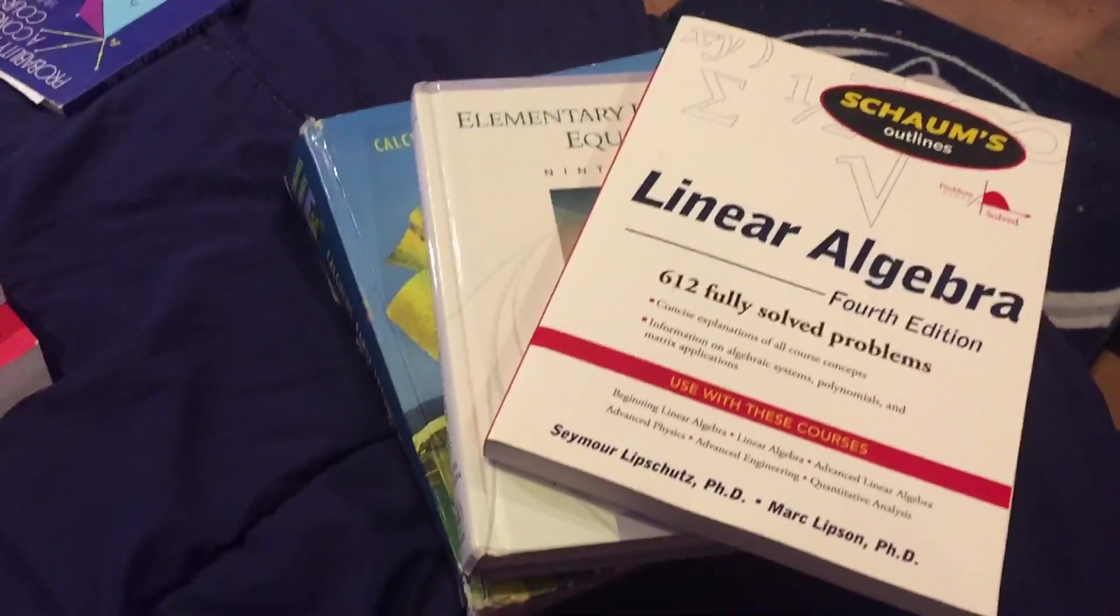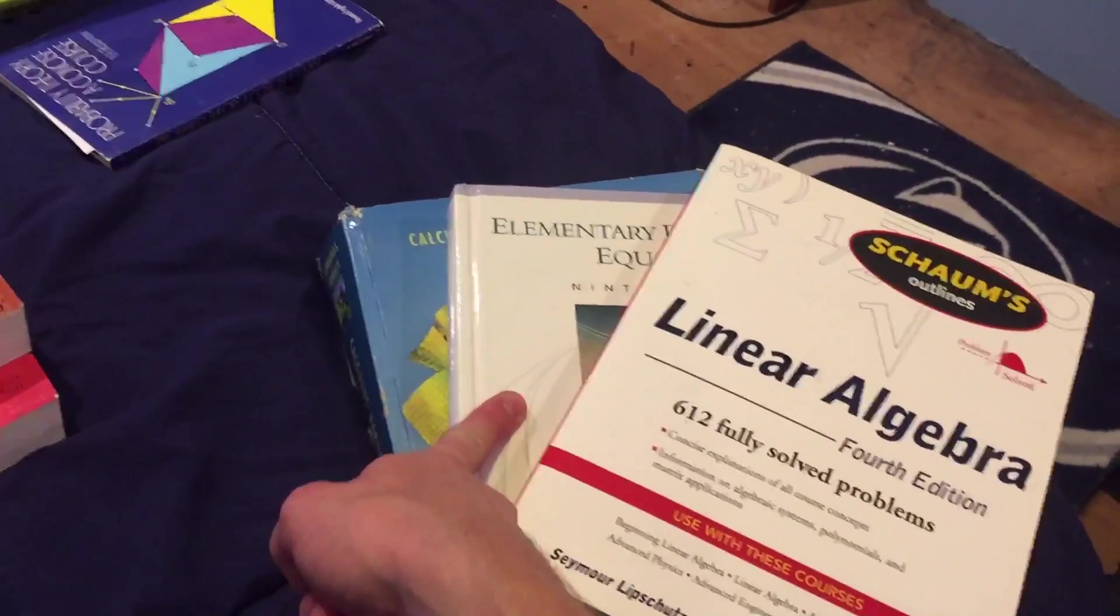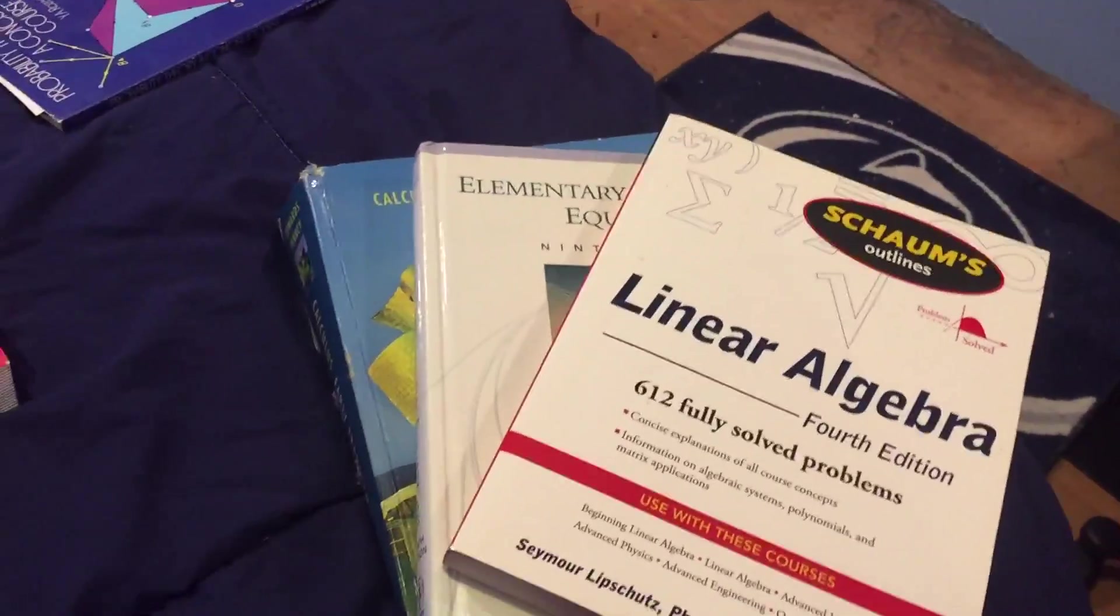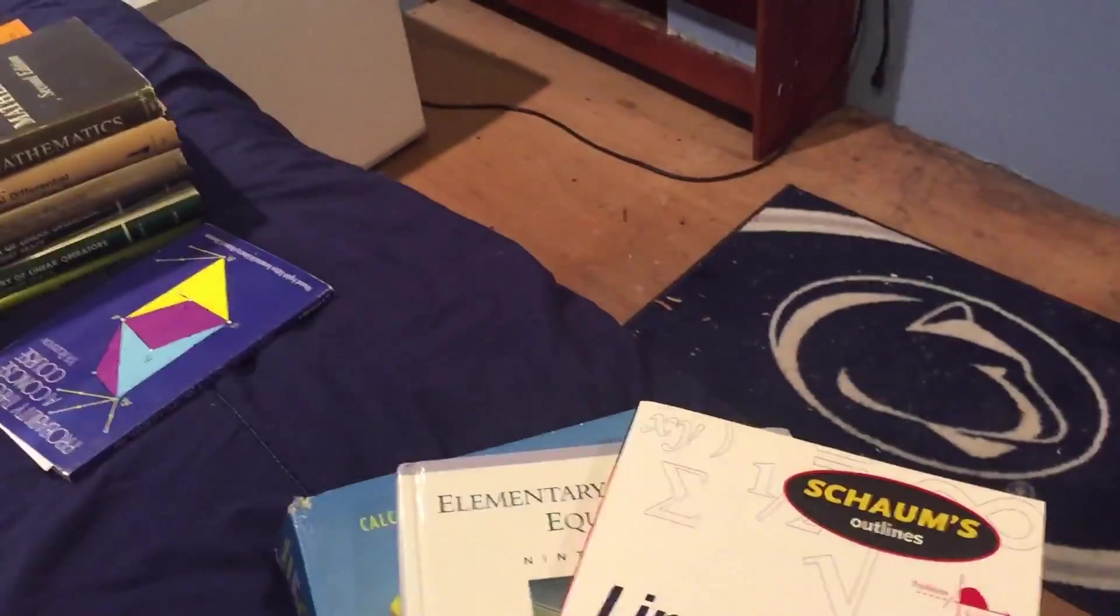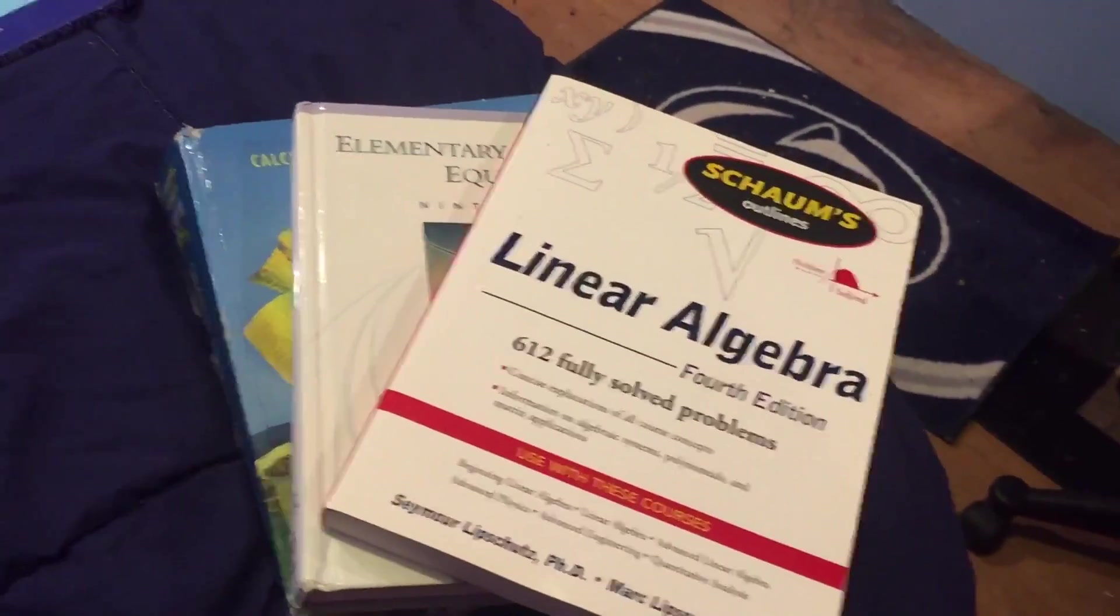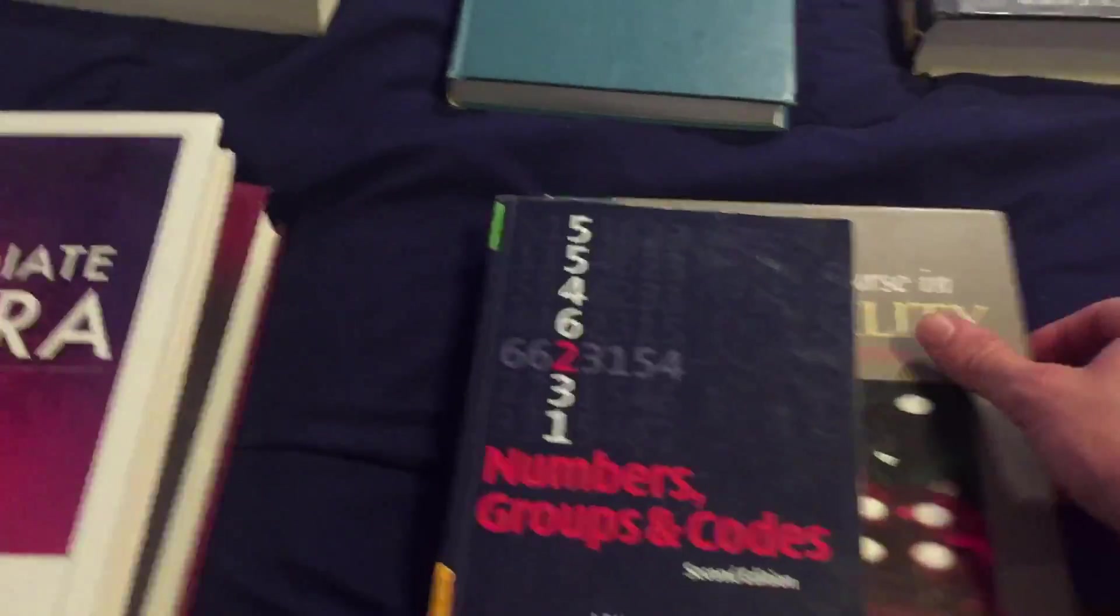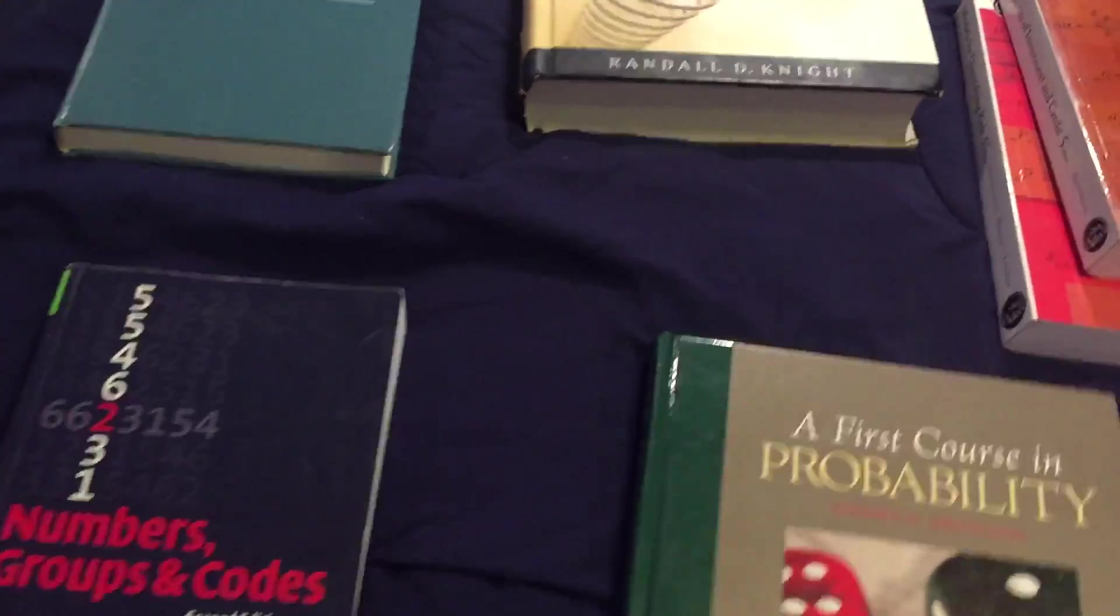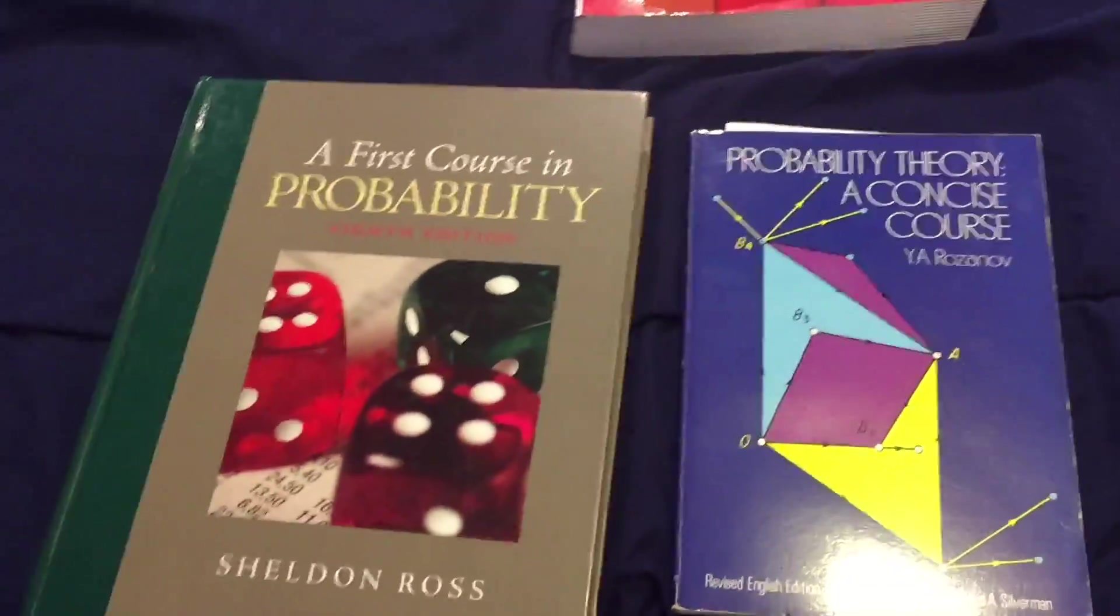My first two years I went to Penn State Mont Alto, which is one of the commonwealth campuses of Penn State. So they didn't offer very much math. I could only take five math classes there, so that was only three books. But when I moved to University Park, I could take higher math classes. One of those I took was probability theory, and that was a really awesome class.